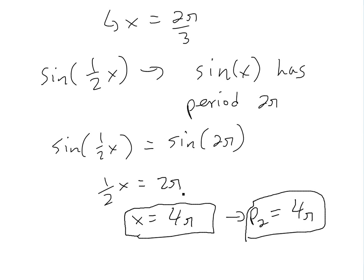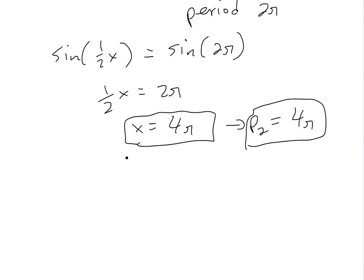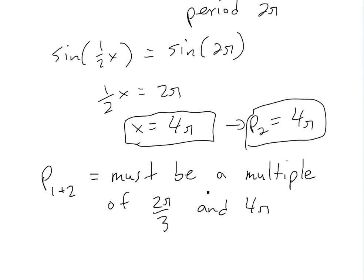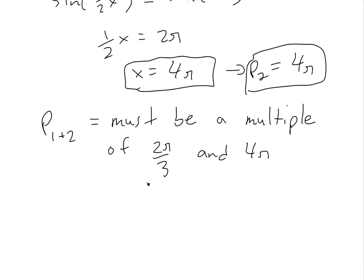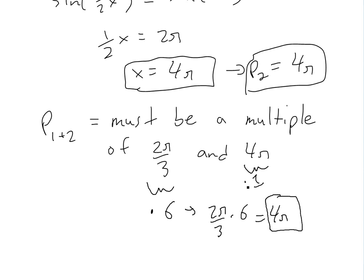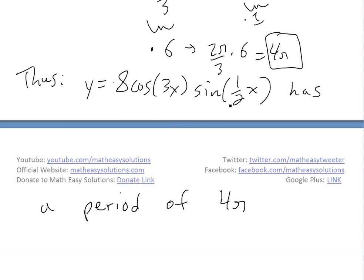As I showed in part one, the period of the combined function has to be a multiple of both individual periods — a multiple of 2π/3 and of 4π. If we multiply 2π/3 by 6, we get 4π. And 4π times 1 is 4π. So 4π is an integer multiple of both periods. Thus the function 8cos(3x)·sin(1/2 x) has a period of 4π.